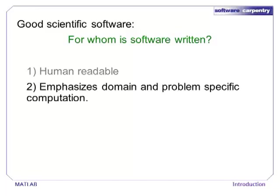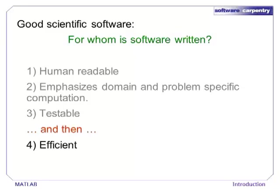Software written for humans emphasizes what is important. Usually, we write code to solve particular problems in particular domains. Good code should emphasize those domains rather than the low-level algorithms that are utilized. Good code should always be testable, which means that its purpose must be clear enough that tests can be written. Finally, good code should be efficient. We will see how MATLAB provides efficiency without sacrificing readability and testability.